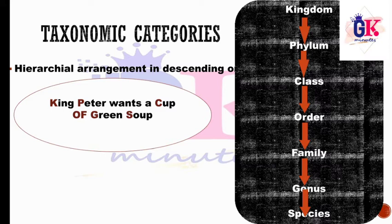King = Kingdom, Peter = P = Phylum, Wants = W (skipped), Cup = C = Class, O = Order, F = Family, Green = G = Genus, Soup = S = Species. This is how we learn the hierarchy arrangement.